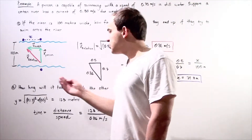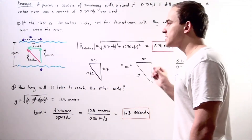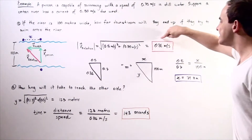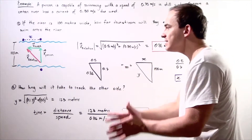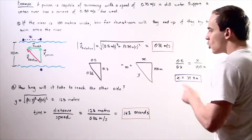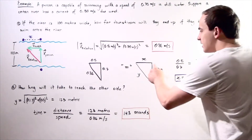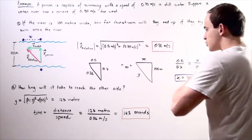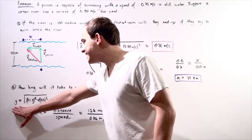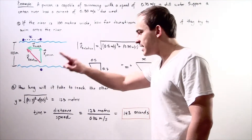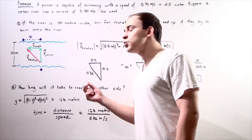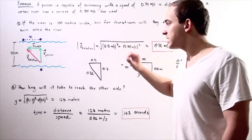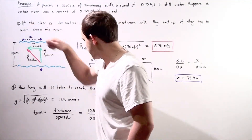In part B, we want to ask: how long will it take to reach the other side? In order to find this, we use the fact that our relative velocity of the person is 0.86 meters per second and find the actual distance that our person travels. We want to find Y. We know X and we know the height of the triangle is 100 meters, so using our Pythagorean theorem: Y squared equals X squared plus 100 squared. Y equals the radical of 71.4 squared plus 100 squared, which gives us 123 meters. Our person actually travels approximately 123 meters along the river to get from point initial to point final.